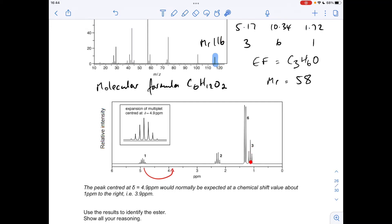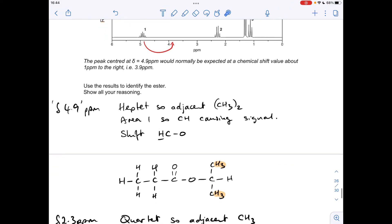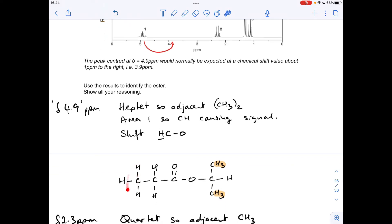So we'll finish with this signal here. So this is a triplet, so there's an adjacent CH2. Area 3, so a CH3 causing the signal. And the shift again, H to C to R. So this time, we're talking about these protons here. Area 3, split into a triplet because of those two. And they're in H to C to R.